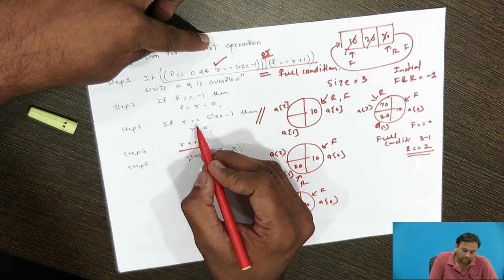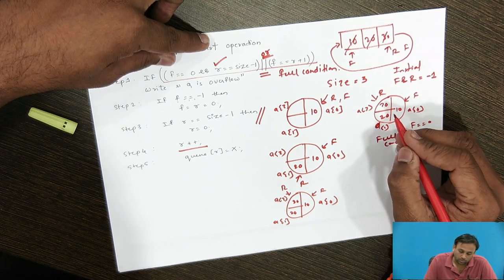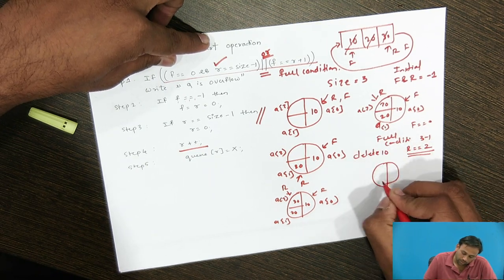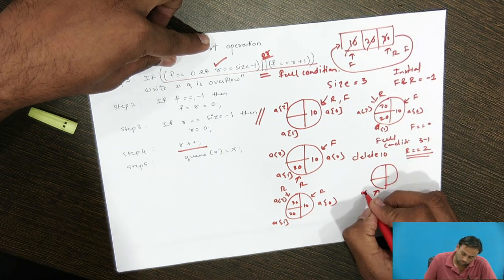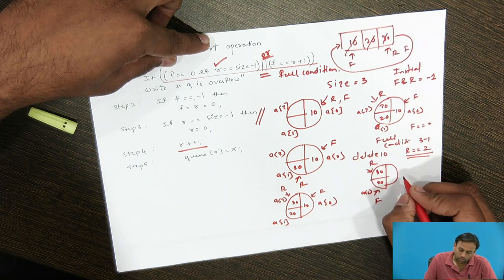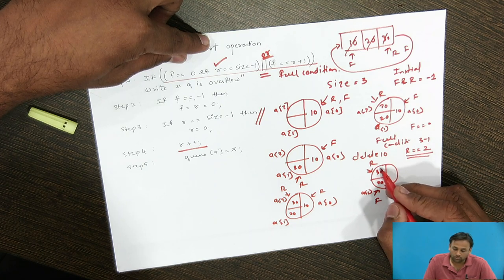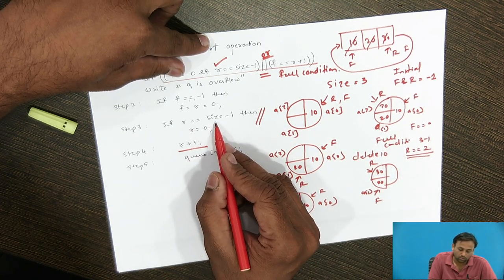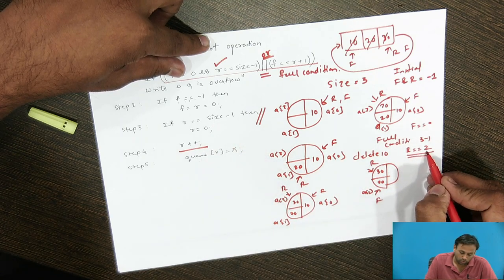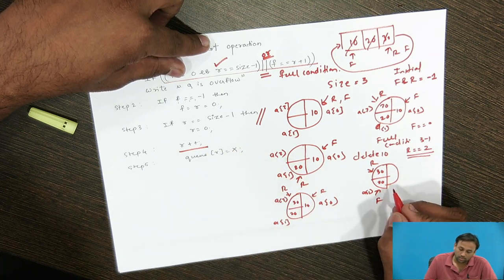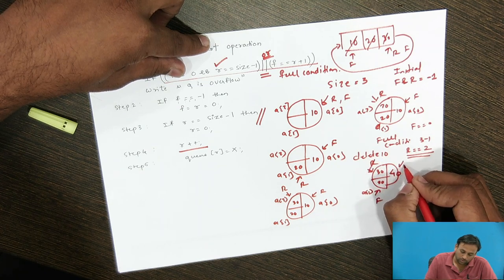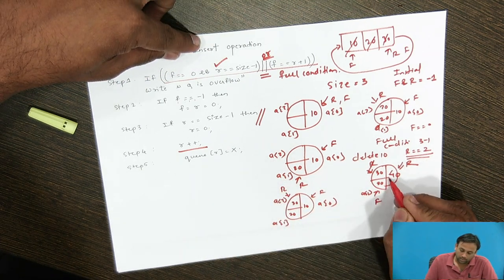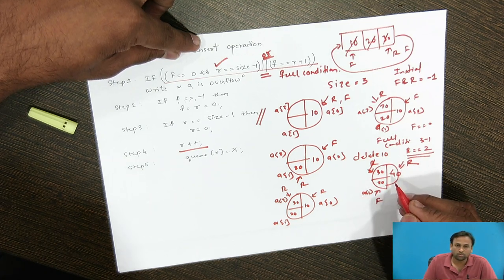When R == size - 1 and we delete an element, say 10, F is incremented to position 1. In a linear queue, re-insertion would not be possible because the last end is not connected to the first end. But in a circular queue, by using the condition R == size - 1, we can insert 40 at position A[0], making R wrap to 0. This achieves effective memory utilization.